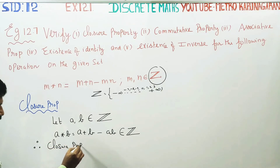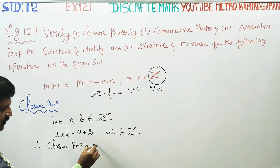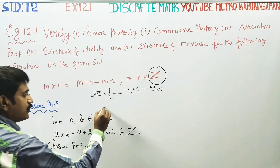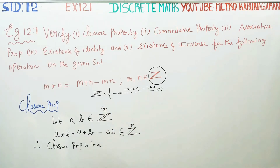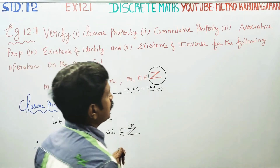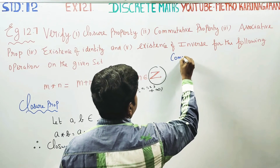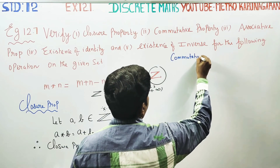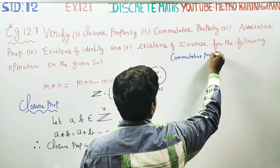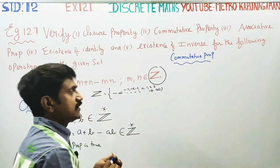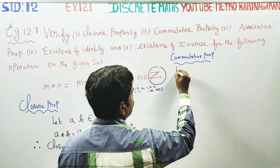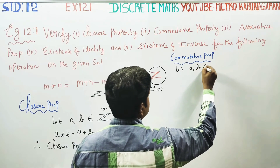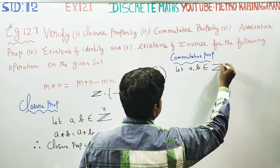Therefore, closure property is satisfied — a star b belongs to Z. After finishing closure property, we move to commutative property. For commutative property, again choose two numbers. Let a, b belong to integers.